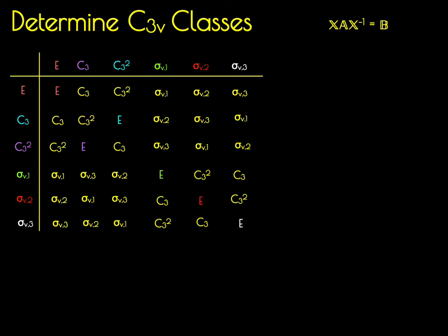We're now going to determine what the similarity transform of E by all elements X are. E times E is E times E is E. We can do the same for C3. E by C3 is C3 E C3 squared, that results in E. E by C3 squared equals E.